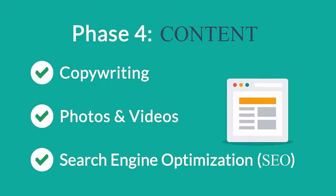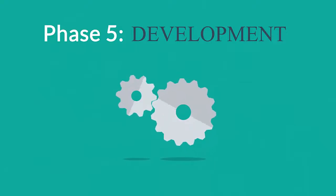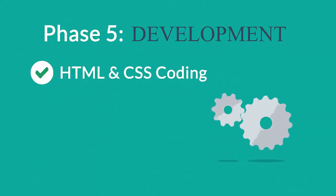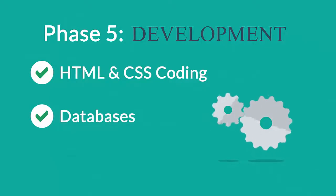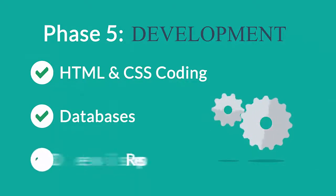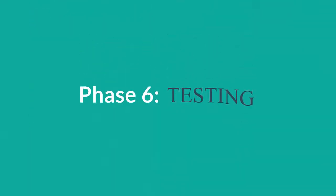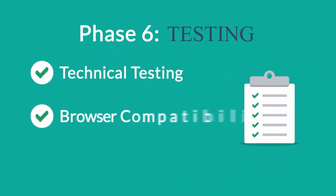Phase 5 — Development: here we actually create the website using hypertext markup language and cascading style sheets, with some help from databases and other technologies as well if needed. Our websites can be made accessible to mobile devices too.